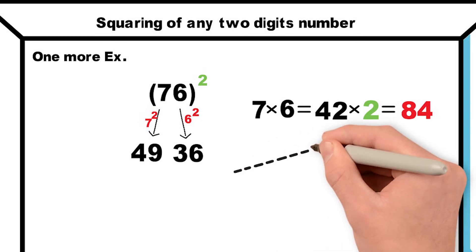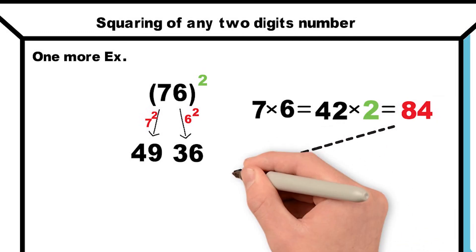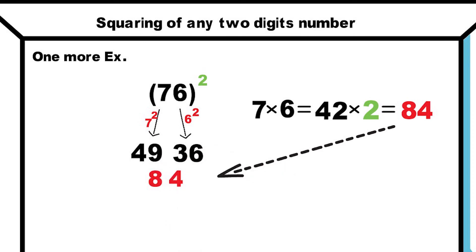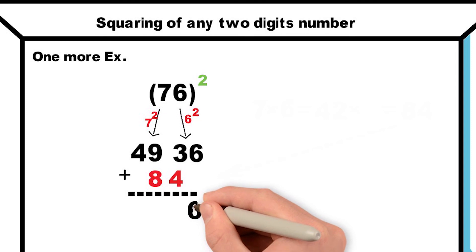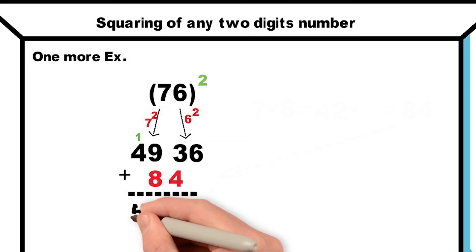At last, we will add this 84 with 4936 after leaving the unit place digit. After addition: 4 plus 3 is 7, 8 plus 9 is 17, write 7 and 1 carry forward, 4 plus 1 is 5. This gives us 5776.